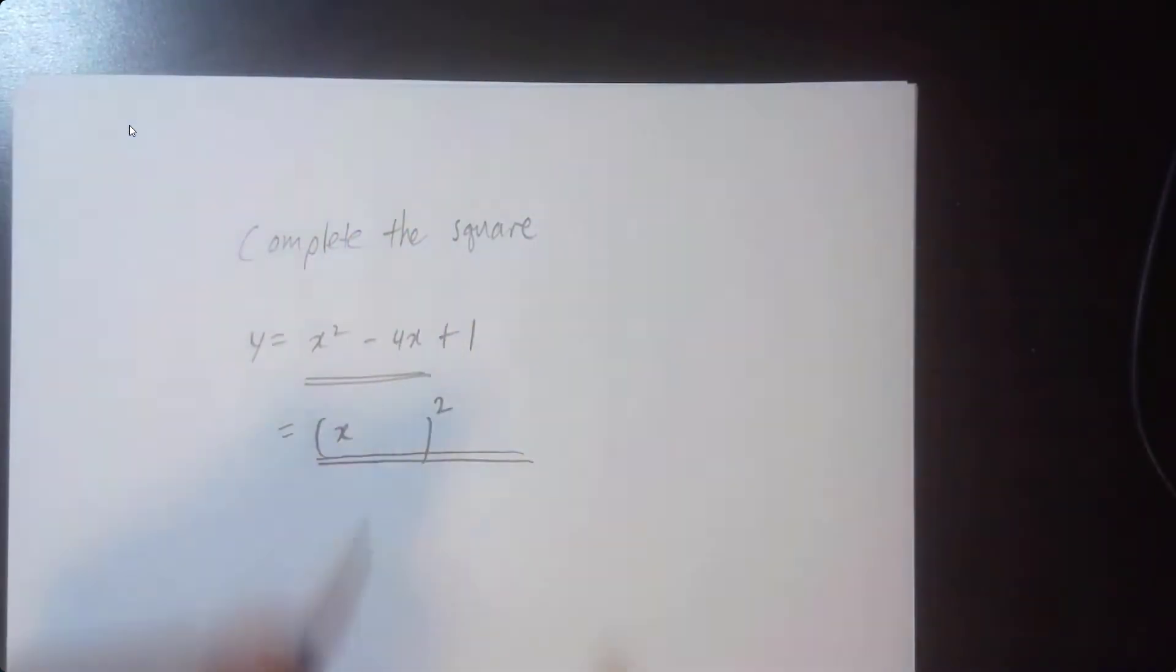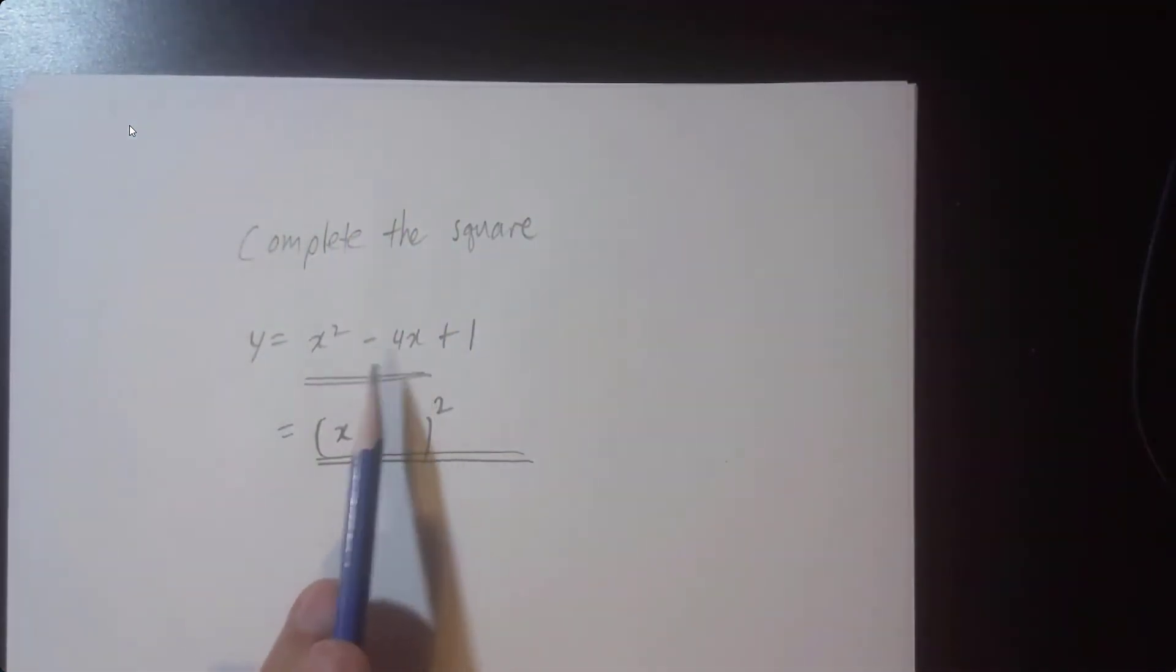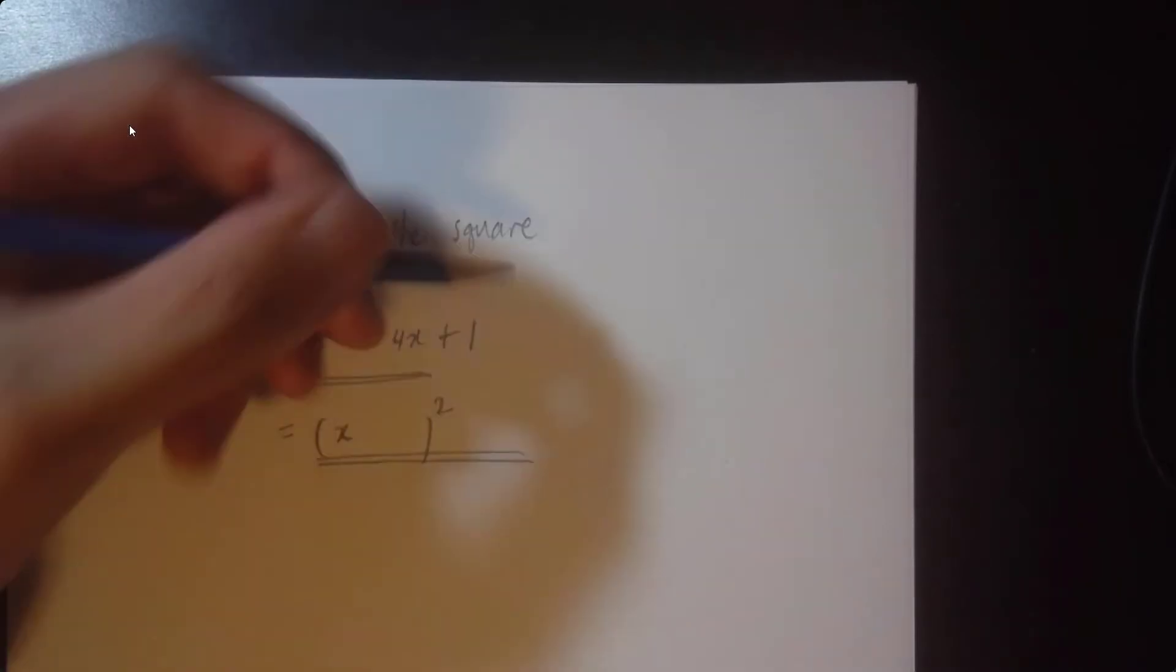Copy down the x. Look at the coefficient in front of the x to the exponent 1, and that number happens to be negative 4. We're going to copy half of that. What's half of negative 4? It's negative 2.